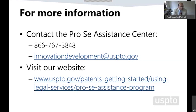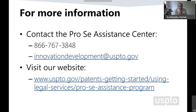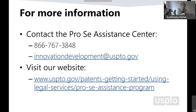Q: How many times can an applicant file the same utility provisional patent? You can file it once. You can file it again with slight modifications if needed, but you won't get the date of the earlier one. As your invention changes, you may file another provisional, but the new one will have a new filing date and new 12-month period — you will not get credit for the previously filed provisional.